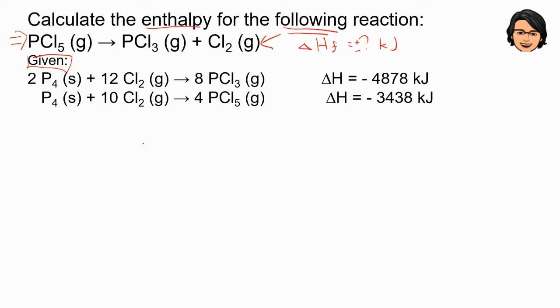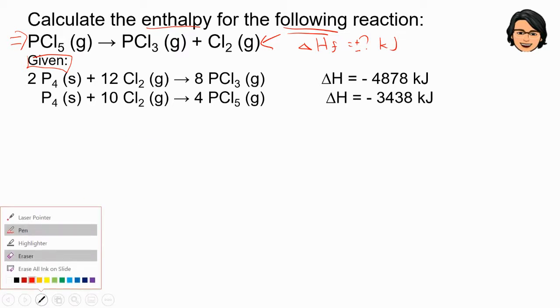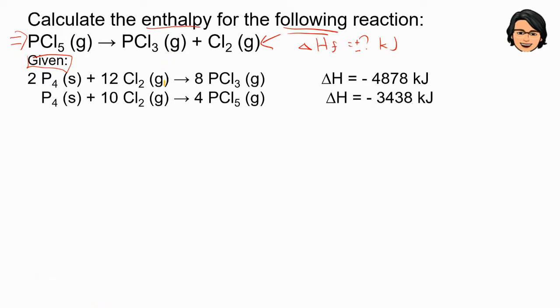Now, let us do one by one. Usually I will look at the final equation first. For example, let's see which one appears only one time. PCL5 appears only one time. You can see the first equation there is no PCL5. The second equation, PCL5 appears once only. So for this kind of question, I will look at the species that only appears once only, then I will start with that equation.